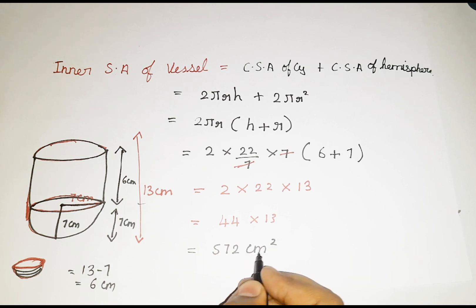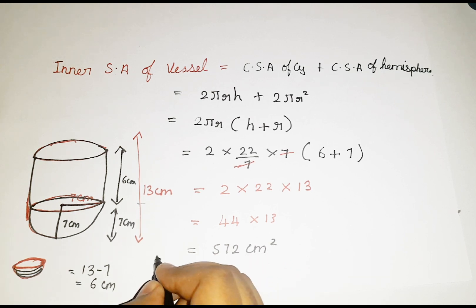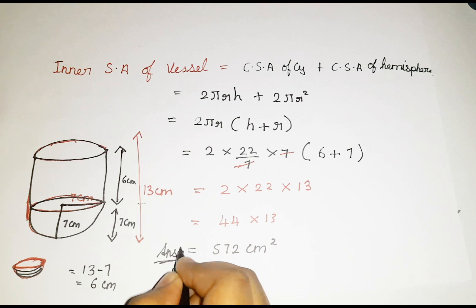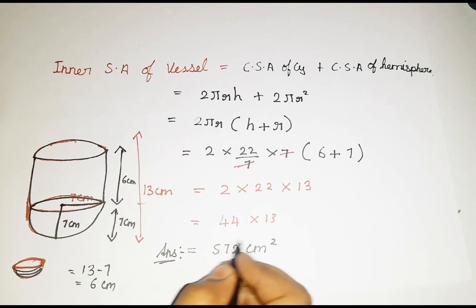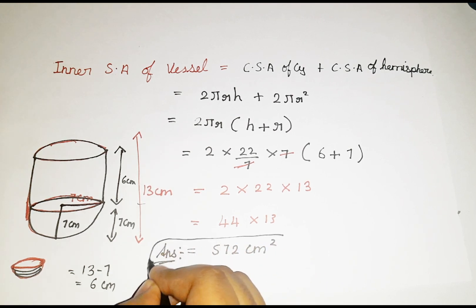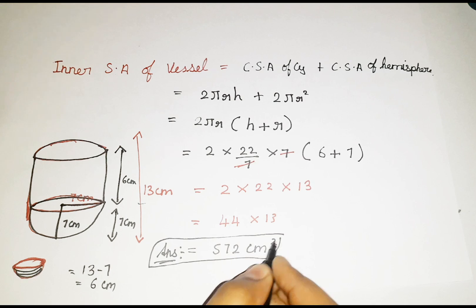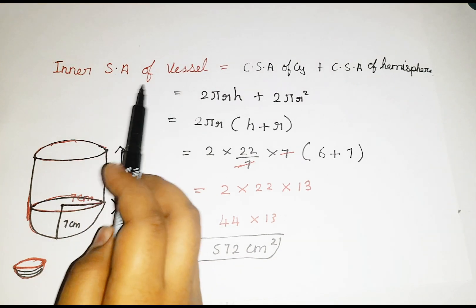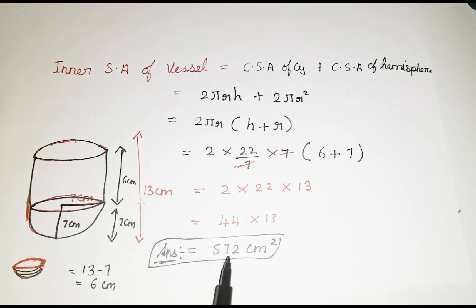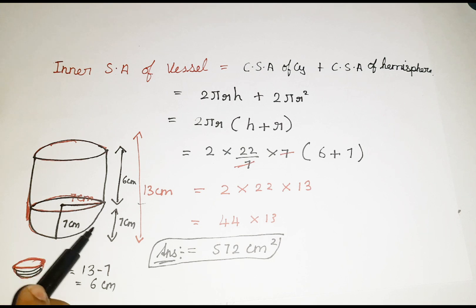This is the answer. Finally, we got the answer. The inner surface area of the vessel is 572 centimetre square. I hope you guys know how to find it.